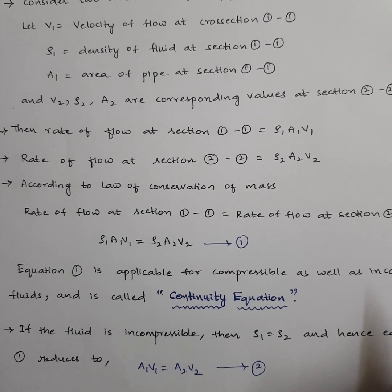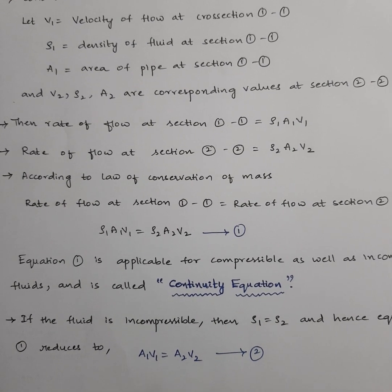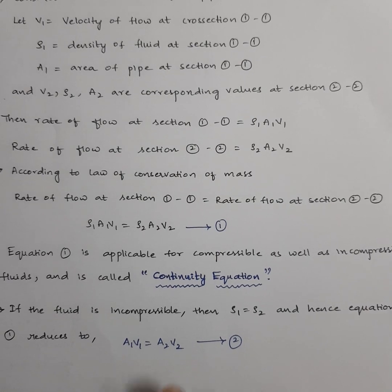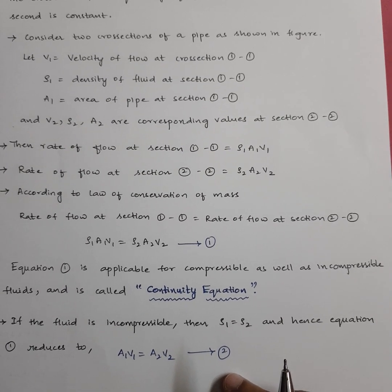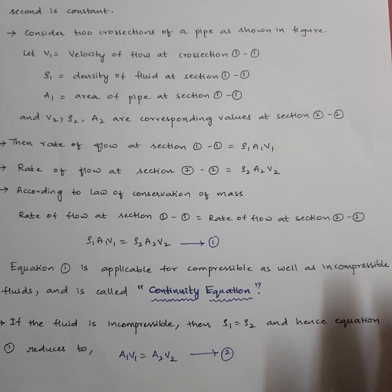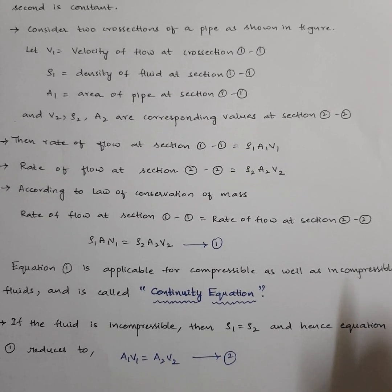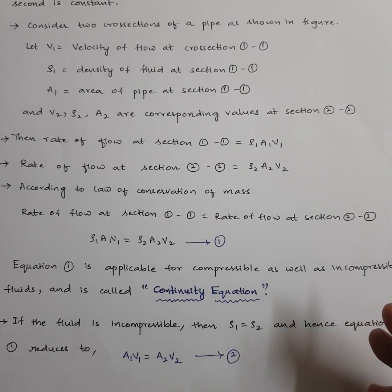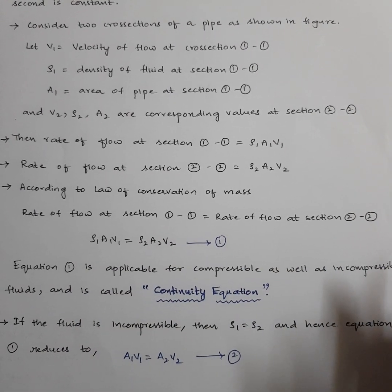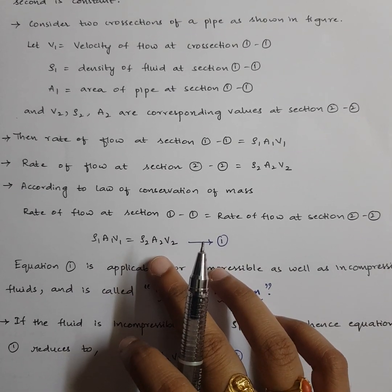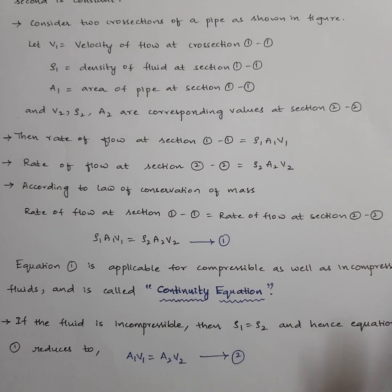If the fluid is incompressible — meaning the density does not change from section 1 to section 2 — then rho 1 equals rho 2, and the equation reduces to A1 V1 equals A2 V2. This is the second form of the continuity equation. In most fluid mechanics problems we assume the fluid to be incompressible and use A1 V1 equals A2 V2. However, for competitive exams, if they ask for the continuity equation, you should select rho 1 A1 V1 equals rho 2 A2 V2, as that is the fundamental form.